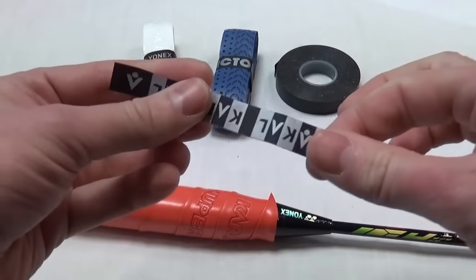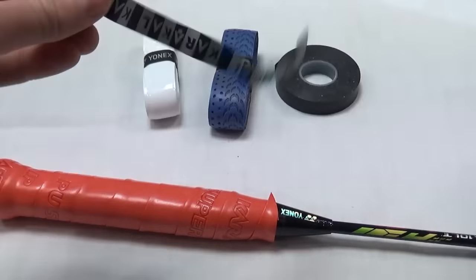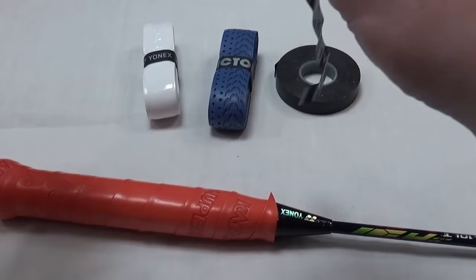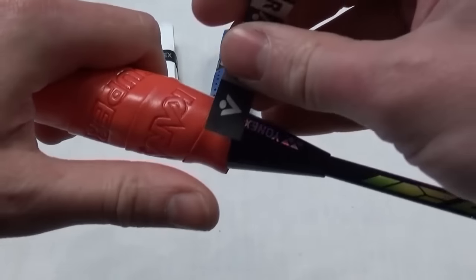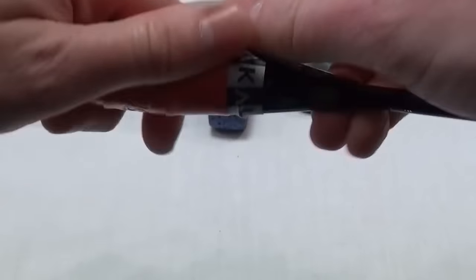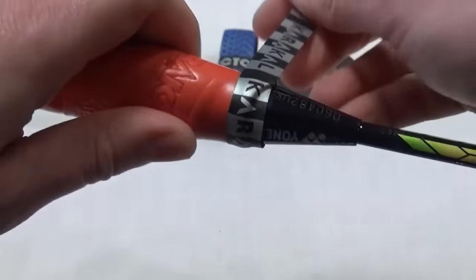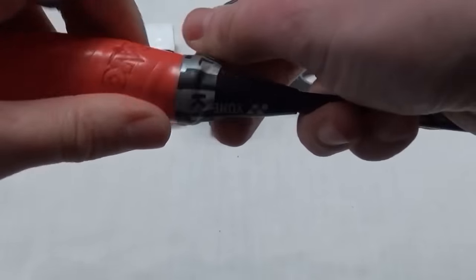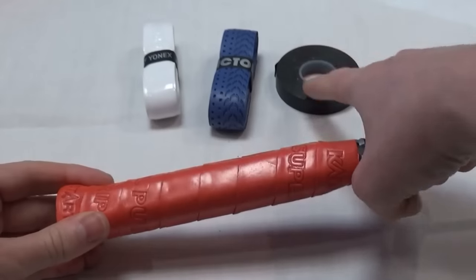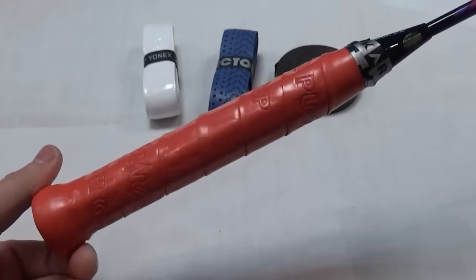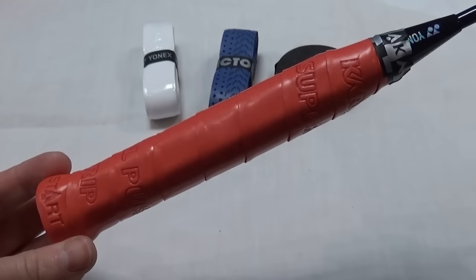Now at this point you can either use the tape that comes with it. Make sure you've removed all the bits of paper, place it on there, just wind it round a few times nice and neat to finish off the grip. Or you can use your own grip tape which tends to be a bit stickier. So there you go, there's a PU grip.